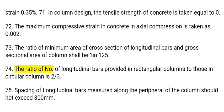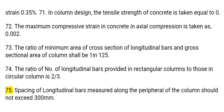74. The ratio of the number of longitudinal bars provided in rectangular columns to those in circular columns is 2/3. 75. Spacing of longitudinal bars measured along the periphery of the column should not exceed 300 mm.